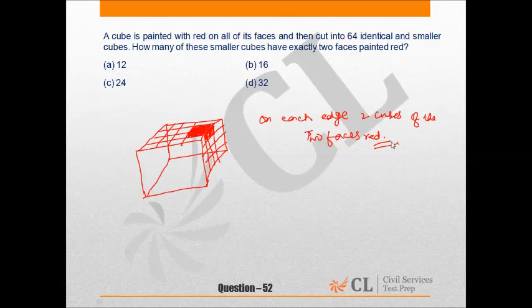Since we know that there are 12 edges in the cube and two cubes on each edge having two faces red, it means in total there will be 12 times 2, that is 24 cubes which will be painted red. So our answer would be option C.